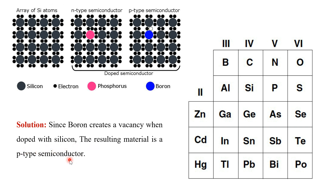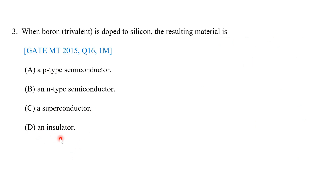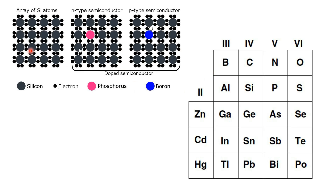Since boron creates a vacancy when doped with silicon, the resulting material is a p-type semiconductor. The options are p-type, superconductor, and insulator. We know silicon is an intrinsic semiconductor being doped — the question is about semiconductors. All you have to know is what happens when trivalent and pentavalent atoms are doped: trivalent (valence 3) creates p-type, pentavalent (valence 5) creates n-type, while silicon itself has valence 4.